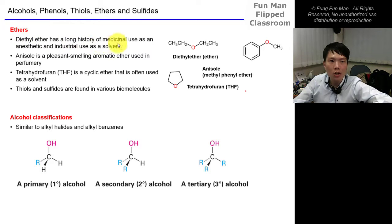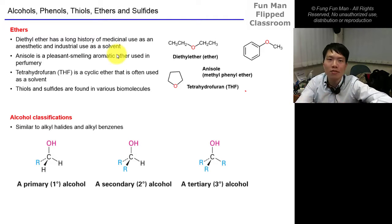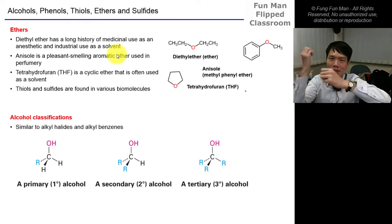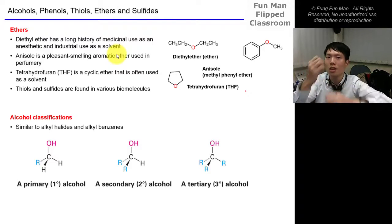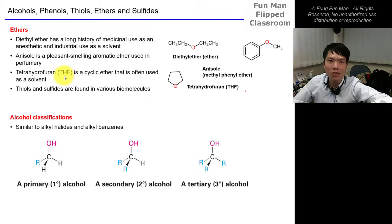Diethyl ether is one of the most common ethers, with a long history in medical use as an anesthetic agent. In the industry today, it is used as a solvent — if you go to any chemistry lab, you will smell ether, as it is used for extraction. Anisole is a pleasant-smelling aromatic ether used in perfumery. THF — tetrahydrofuran — is a cyclic ether often used as a solvent.